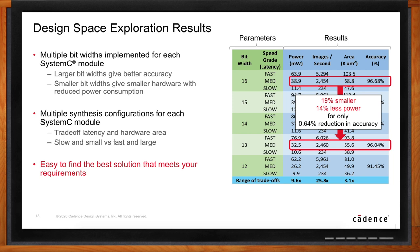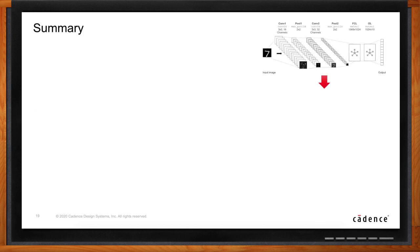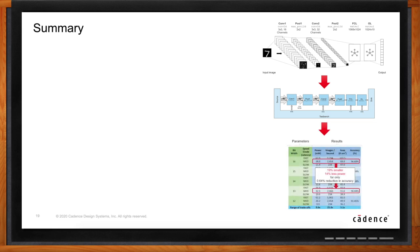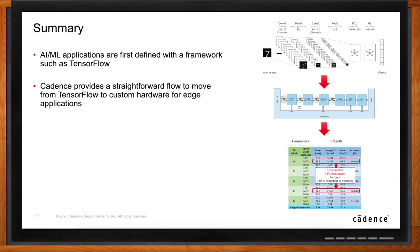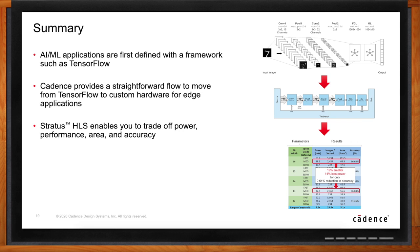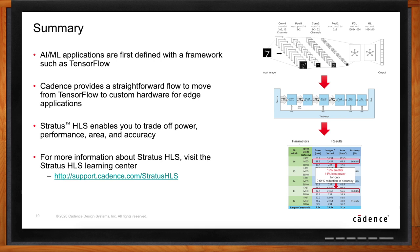To summarize how we get from TensorFlow through HLS to custom hardware: AI/ML applications are first defined in a framework like TensorFlow, and if you want to implement them in hardware you want the most efficient implementation possible. Cadence provides a straightforward high-level synthesis flow to go from TensorFlow to custom hardware that meets your targets. Stratus HLS enables trade-offs of power, performance, area, and accuracy to find the best solution. You can download this example from the Stratus HLS support website — it includes both the TensorFlow code and the SystemC model so you can run it yourself and experiment.